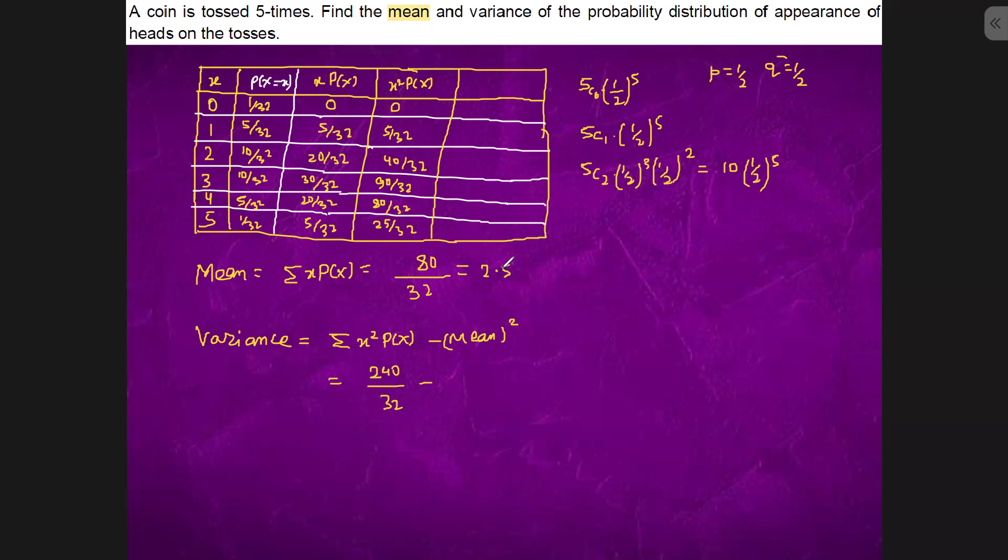And here we have 25 by 10, which is 5 by 2. So, it is 80 by 32. We multiply, so this is 160 upon 32. It will be 25 upon 10, which is 5 by 2. If we multiply 16 in denominator and 16 in numerator, it is 80 by 32.